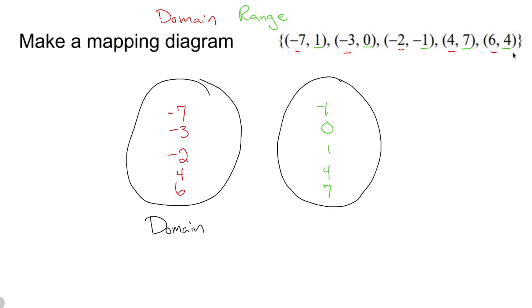Now, if at any point these numbers repeat, like if I had a negative seven in the domain and a negative seven somewhere else in the domain, you're not going to write it out twice. Now this second bubble is range. Some teachers will put output.